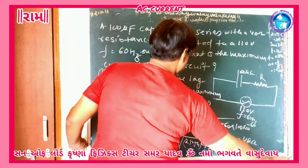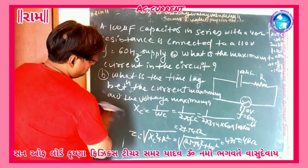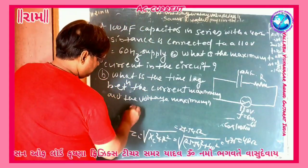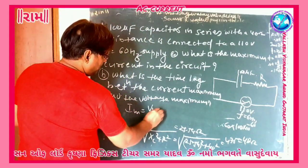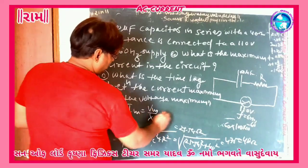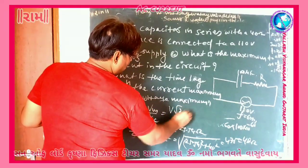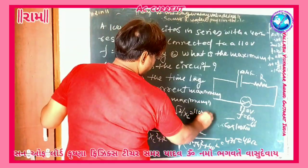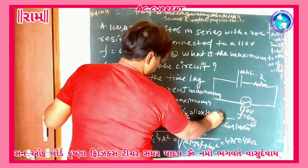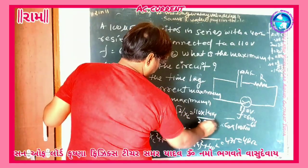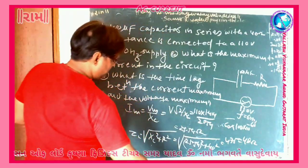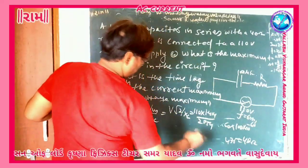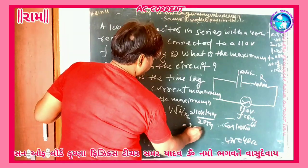Now we have to find the maximum current. We use the formula: maximum current IM is equal to VM upon Z, which equals V times root 2 upon Z. Keeping the values: 110 times 1.414 upon 48, the answer we get is 3.24 ampere.